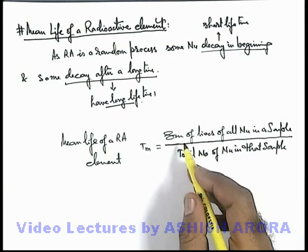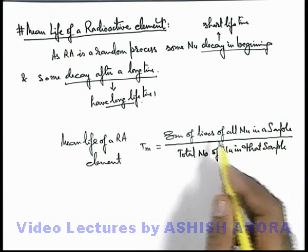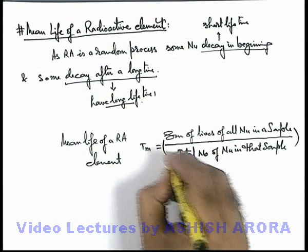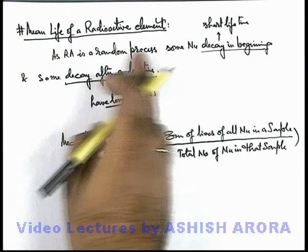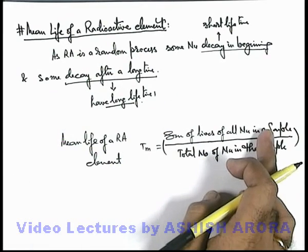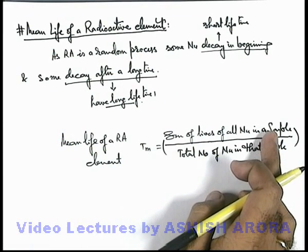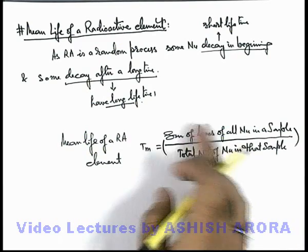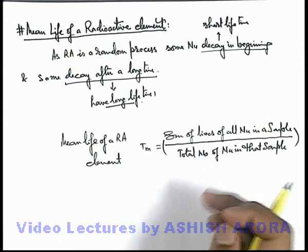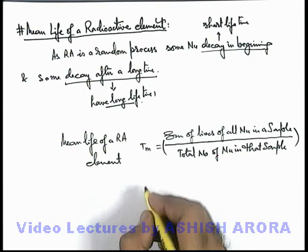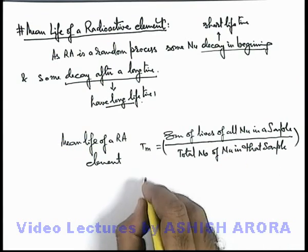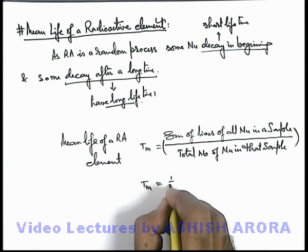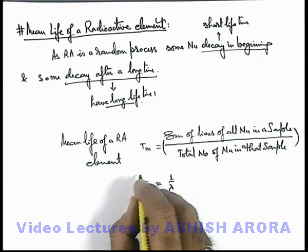So the ratio of the sum of the lives of all nuclei to the total number of nuclei gives us the mean life. This cannot be directly calculated as the process is random, so it can be calculated by the laws of probability. After calculation and analysis, the result comes out to be equal to the reciprocal of the decay constant of the element.